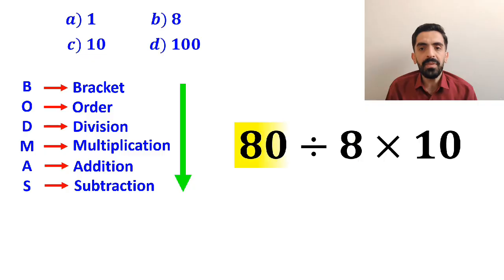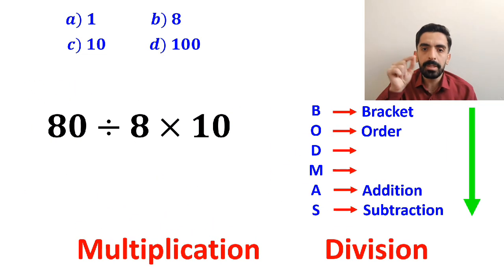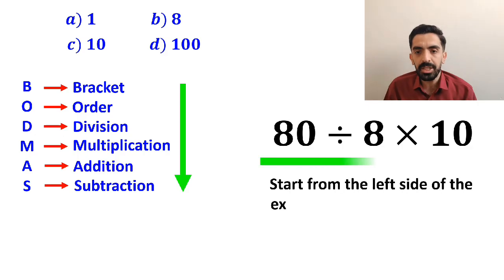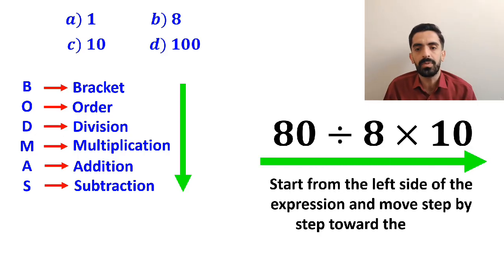Now, it's time to simplify this expression. It's very important to note that in the BODMAS rule, multiplication and division have exactly the same level of priority. In this case, all we need to do is start from the left side of the expression and move step-by-step toward the right.